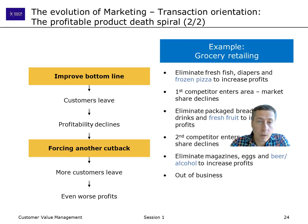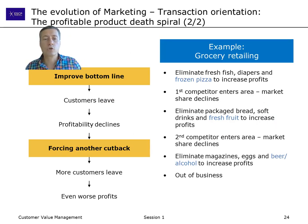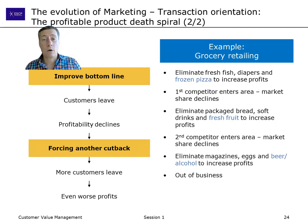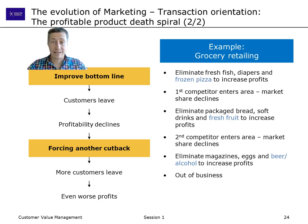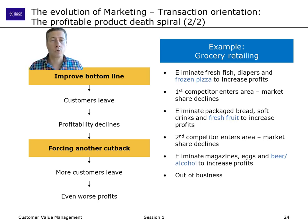This can lead to what is called the profitable product death spiral. You conduct a product line profitability analysis hoping to improve the bottom line, you cut certain products, customers leave, your overall business model changes, fixed costs are distributed over fewer products and customers, other products become unprofitable, you cut those too, more customers leave — and so on, until you either become a store that only sells beer or you catapult yourself out of business entirely.